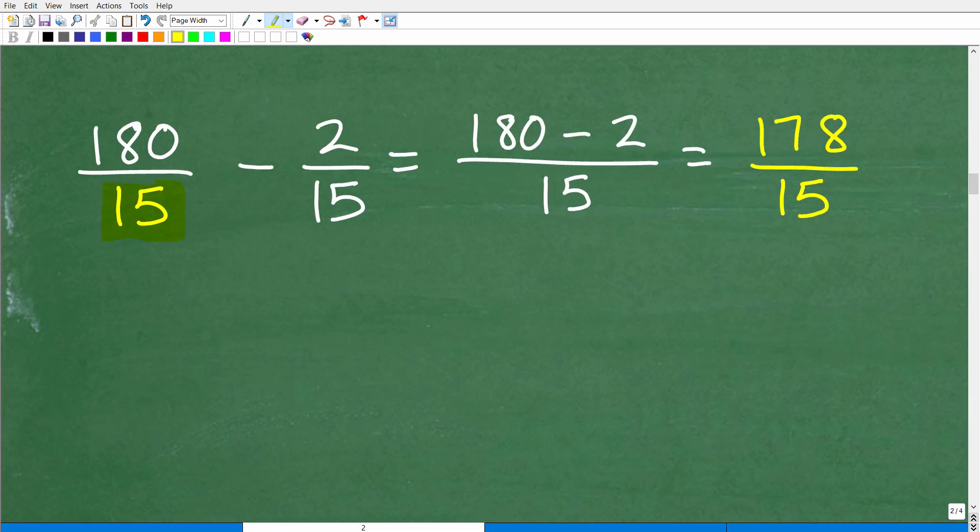Let's go ahead and fix this up now. So again, because the denominators are the same, we're ready to go ahead and find the difference, i.e., subtract the numerator. So this is going to be 180 minus 2 over 15. And, of course, 180 minus 2 is 178 over 15. And this fraction here is fully reduced.